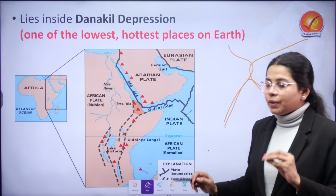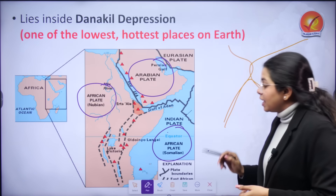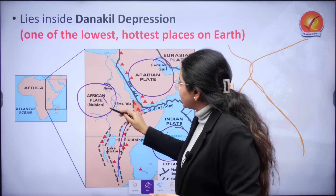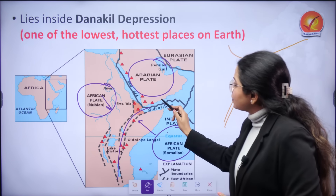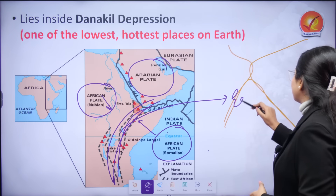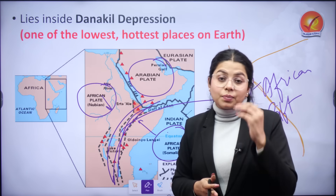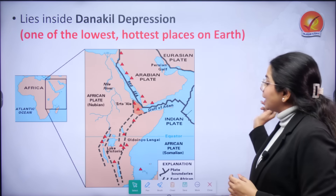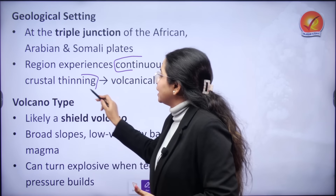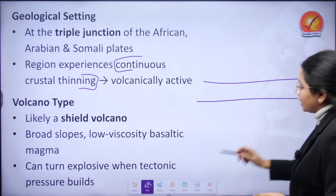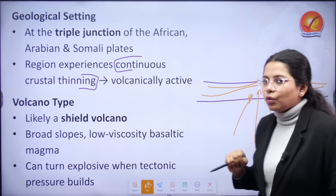The region where this eruption has taken place is where three plate boundaries meet: the African plate, the Somalian plate, and the Arabian plate. The boundary of the Somalian plate is a divergent boundary where the plates are moving away from each other, which is why the East African Rift has also been created. Because of this rifting at the triple junction of these three plates, there was continuous crustal thinning happening, increasing the possibility of magma outflow.